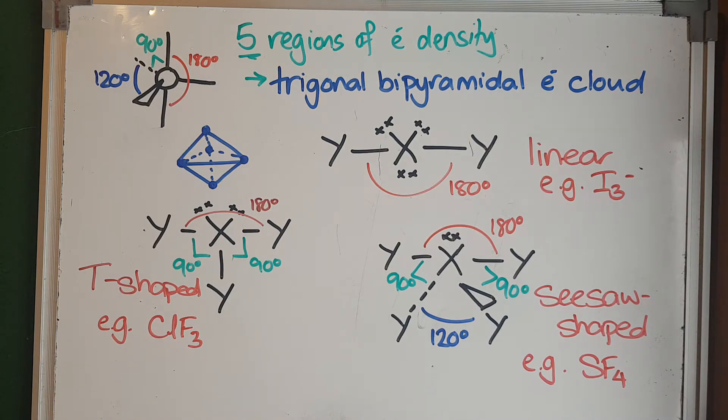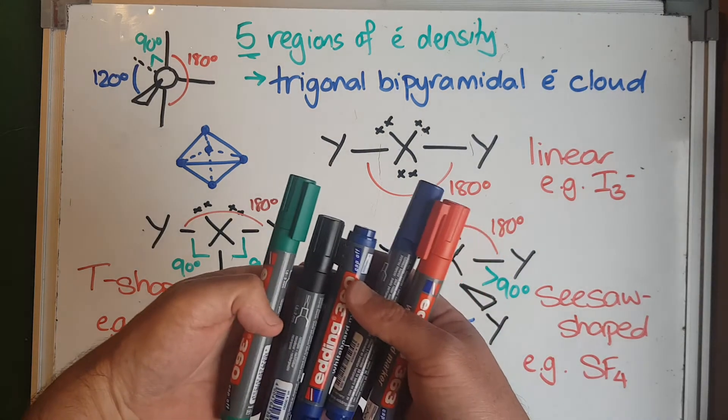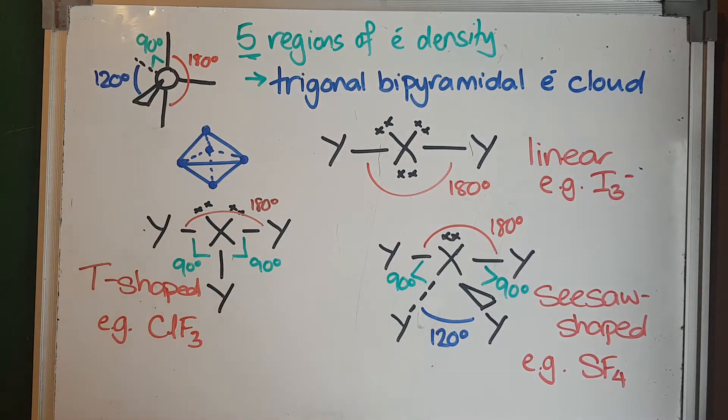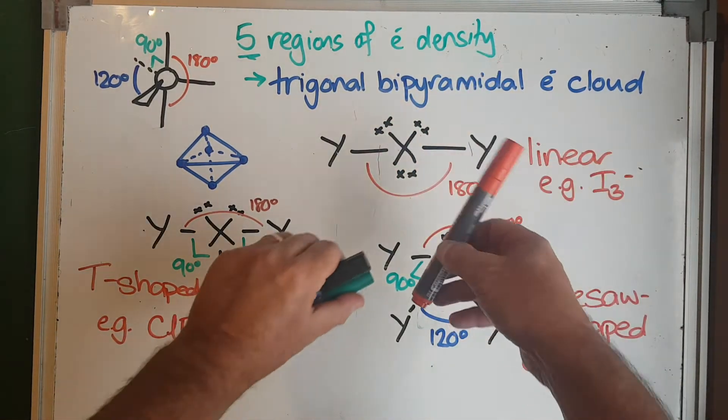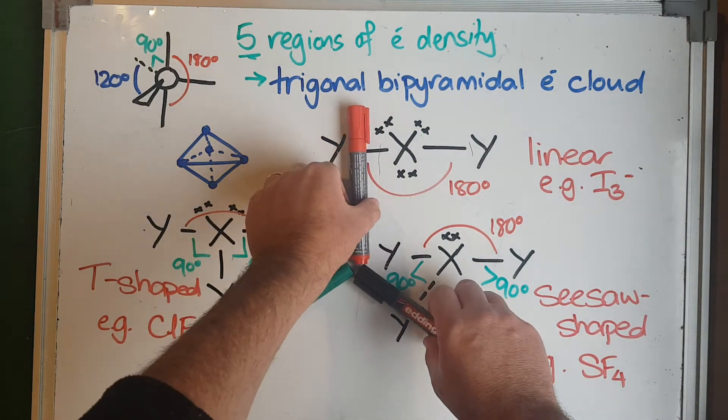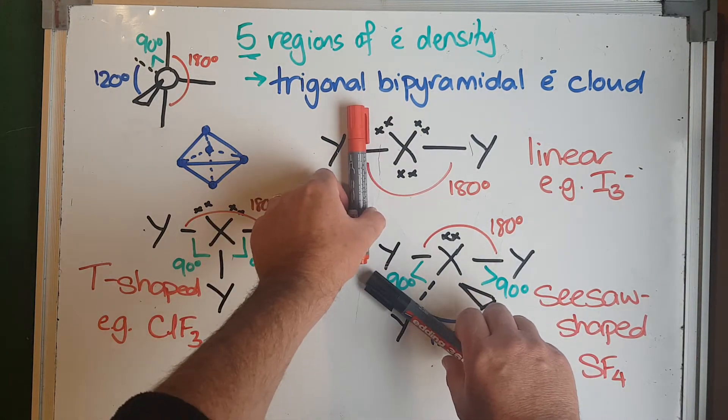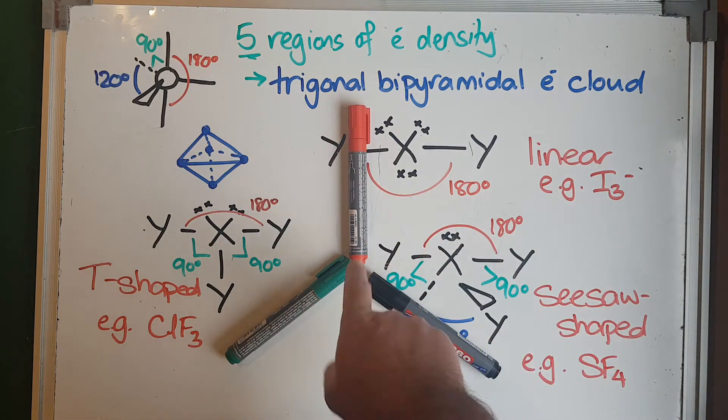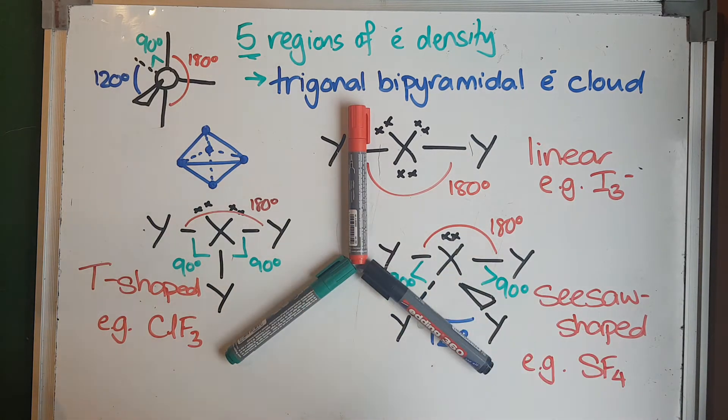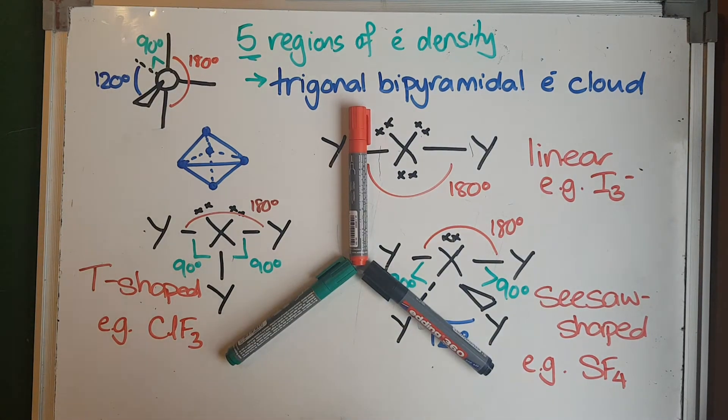These are very hard to visualize in three dimensions without something three-dimensional to play with, so I've grabbed some pens that hopefully are going to help with this. Basically, what we've got is three regions of electron density that are evenly spread out like an equilateral triangle with 120 degrees between each of them. That's as far as they can get spread out because they're repelling each other—remember, this is all about electron repulsion.